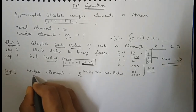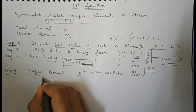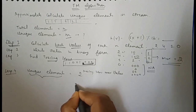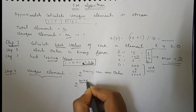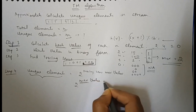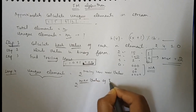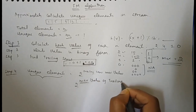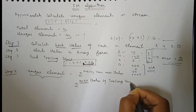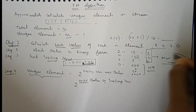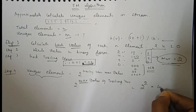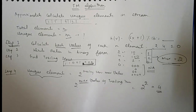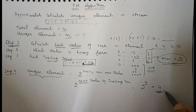For finding the number of unique elements, the formula is 2 raised to the power of the maximum value of trailing zeros. So it is 2 raised to the power 2, that is 4. From this we can approximately calculate the number of unique elements.